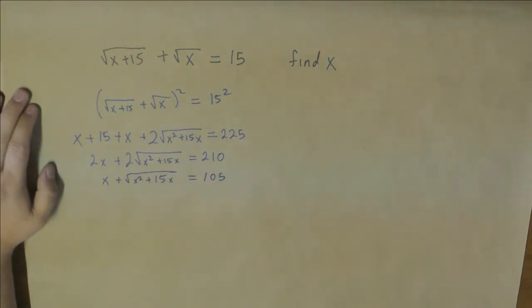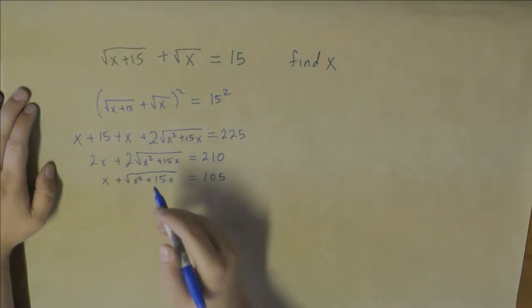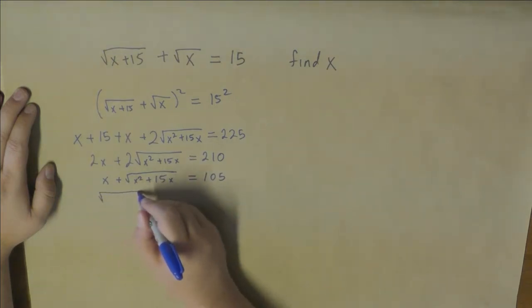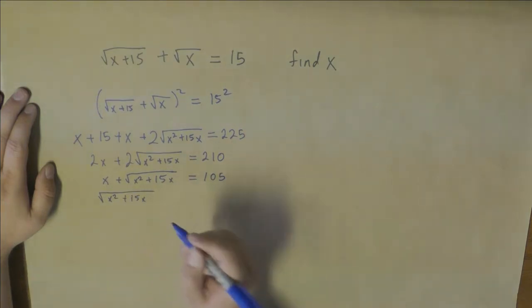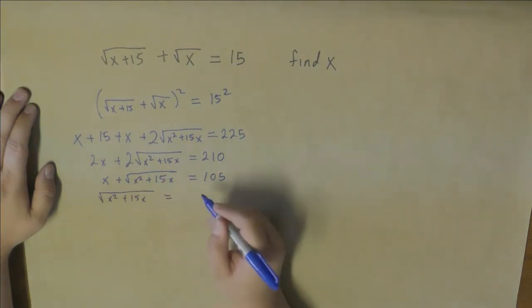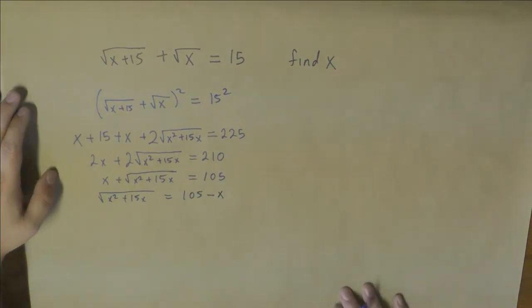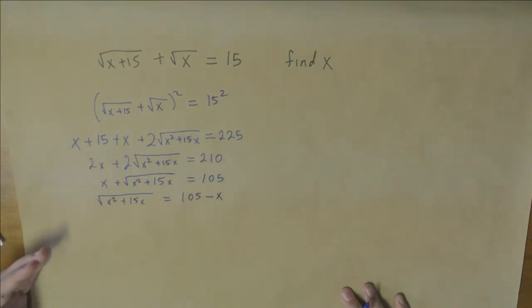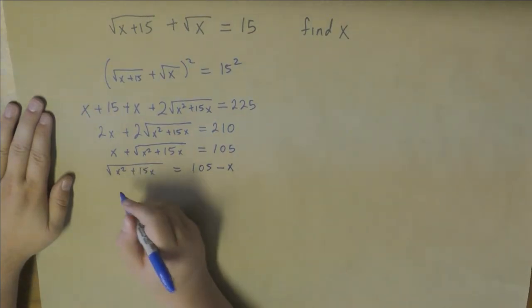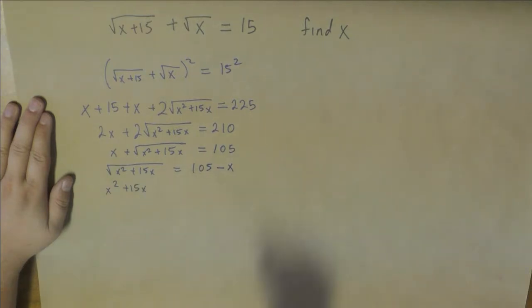Now we still have a square root sign we need to get rid of, but we need to have it on its own. So if we move this x to the other side, then we have the square root of x squared plus 15x equals 105 minus x. When we square this, square both sides, we'll have no square root sign left.